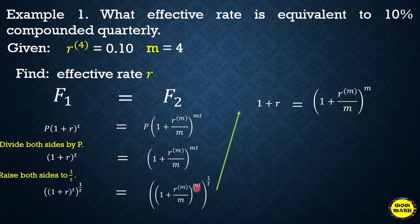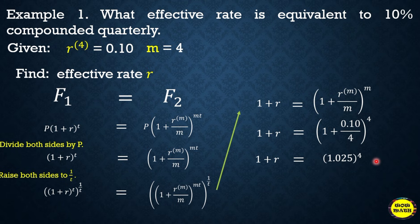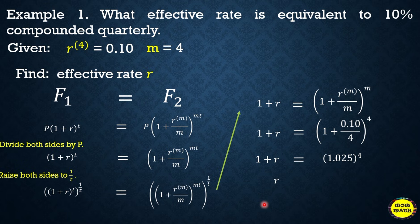Substituting the given values: 1 + r = (1 + 0.10/4)^4. Simplifying: 0.10 divided by 4 is 0.025, so we have 1.025 raised to 4. Since we are looking for the effective rate — the rate compounded annually — we transpose the 1 to the right side: r = 1.025^4 − 1.